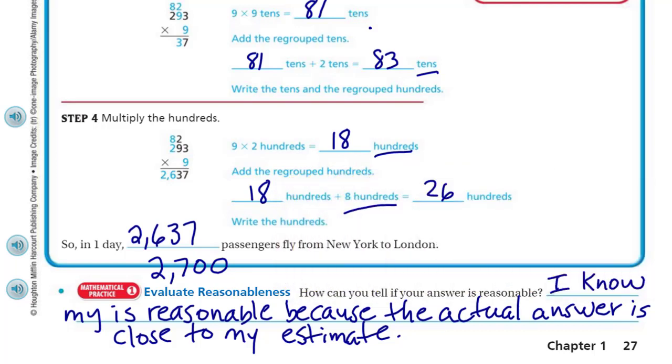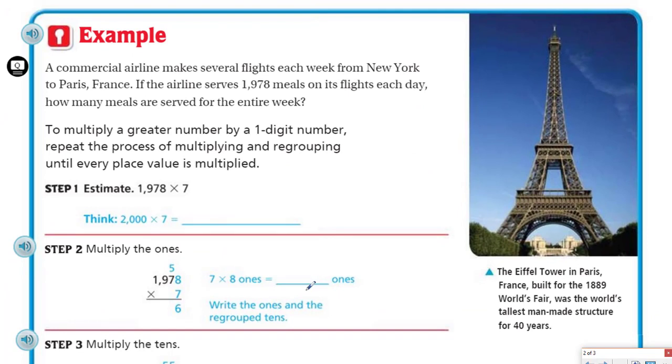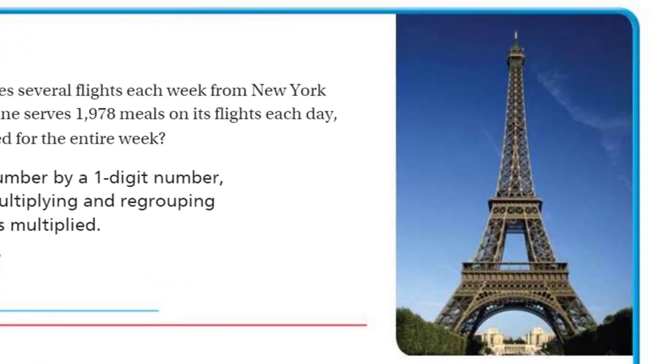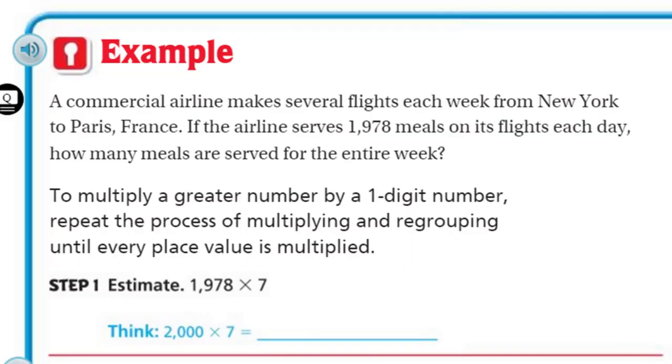Let's go to the next page. Example. So we get like another problem. There's the practice one and they're not supposed to give us as many clues. But first I have to look at this. The Eiffel Tower in Paris, France. Built for the 1889 World's Fair, was the world's tallest man-made structure for 40 years. This one says a commercial airline makes several flights each week from New York to Paris, France. Very similar to our last problem, but now we're going to France. If the airline serves 1,978 meals on its flights each day, how many meals are served for the entire week? What a problem.